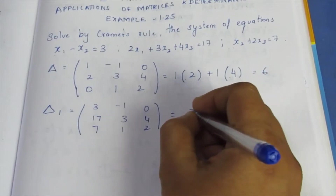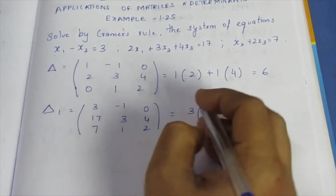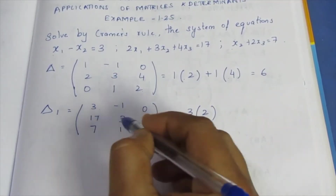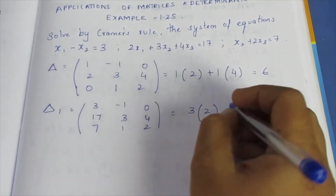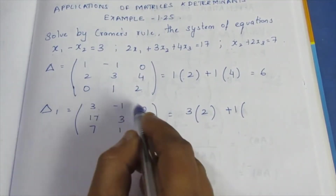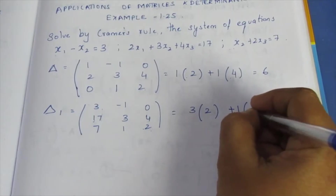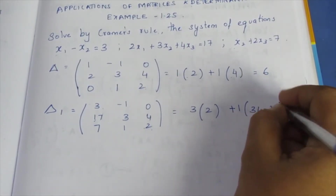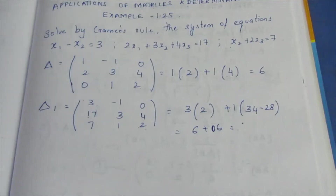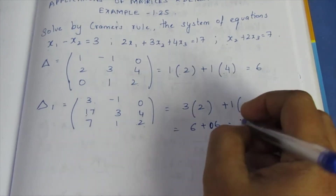First, we will find 3 times the row and column: 6 minus 4 is 2, same as before. Then minus of minus 1 becomes plus 1, same as before. Now row and column: 17 times 2 is 34, minus 7 times 4 is 28. This zero term equals 0, so 34 minus 28 equals 6, and 6 plus 6 equals 12. So determinant D1 is defined as 12.